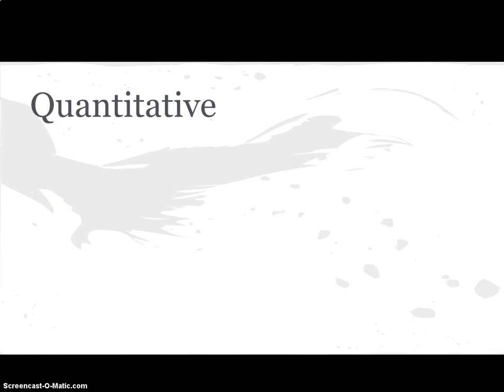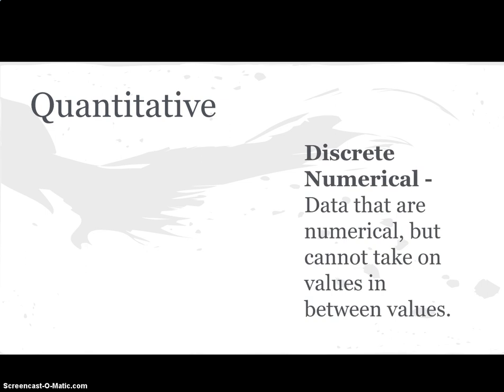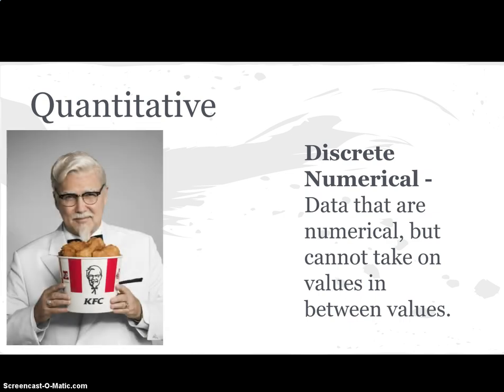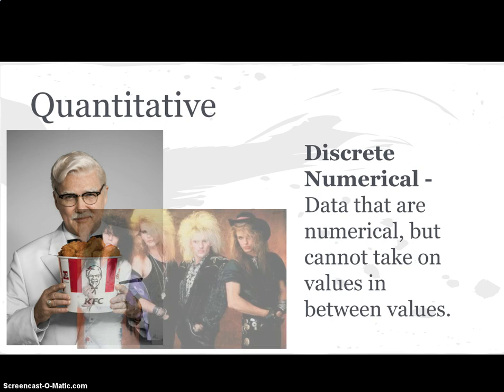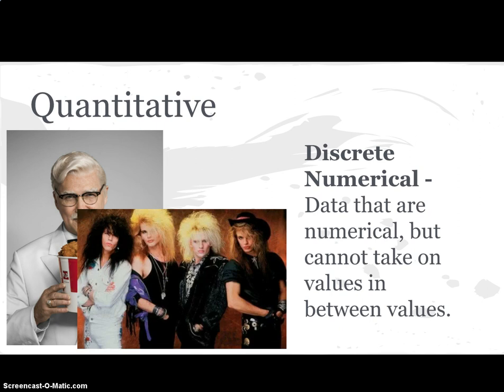So what is a quantitative variable? Quantitative variables are often numerical. The first one is discrete. A discrete variable is something that cannot take on values between other values. For instance, the number of pieces of chicken in a KFC bucket — it's going to be one, two, three, four, eight piece chicken — only integer values. You're not going to have half a piece of chicken in your bucket. Same goes for creating your 80s retro hairband — you wouldn't have three and a half people in your hairband. That's a discrete numerical variable.